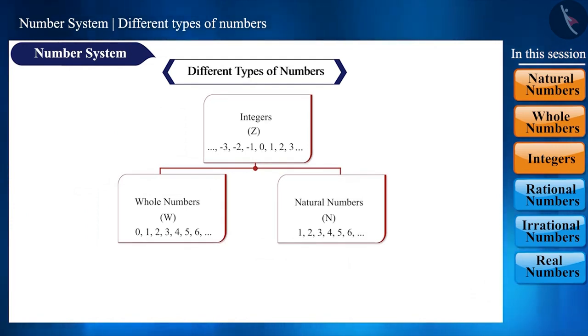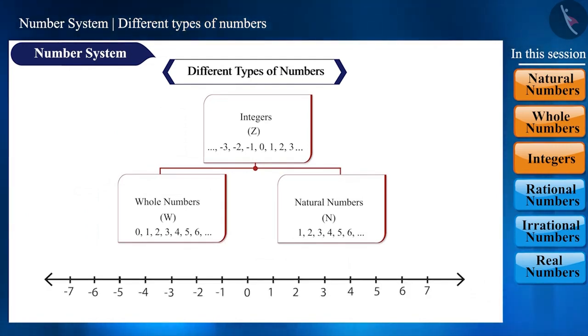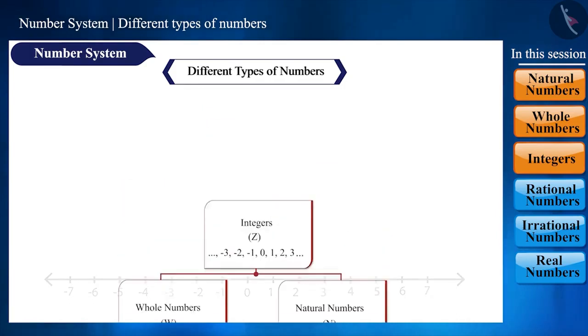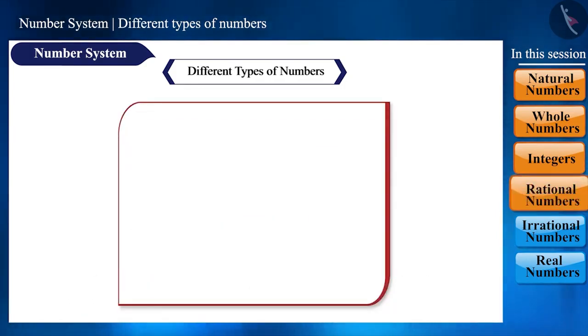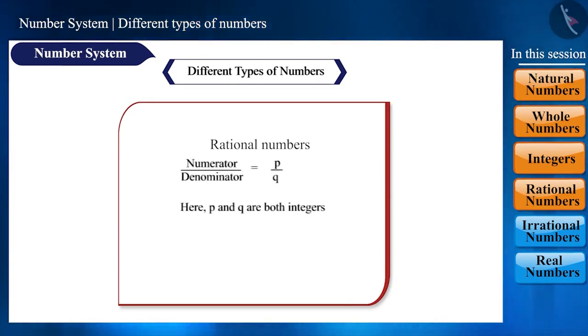We have seen how these numbers are represented on the number line. Now, we will talk about rational numbers. Rational number is the one we represent in the form P by Q, where both P and Q are integers and Q is not 0.